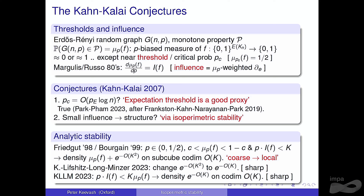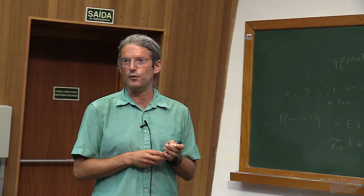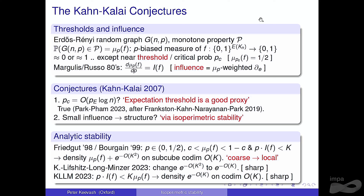These are analytic stability results describing the structure one gets from assuming bounds on the influence — which says you have a coarse threshold. The Friedgut-Bourgain setting is the dense regime where function measures are bounded away from zero and one. The statement is that if you have a bound on the p-weighted boundary then you get some correlation with a subcube of small co-dimension, just depending on the constant k, with a significant increase in density.